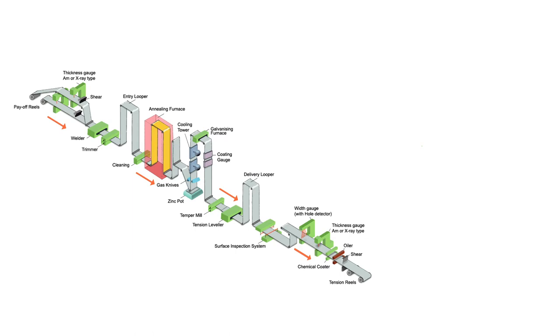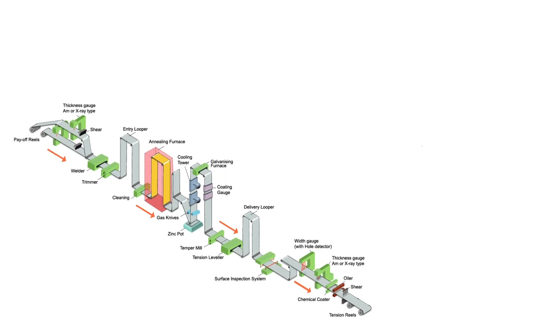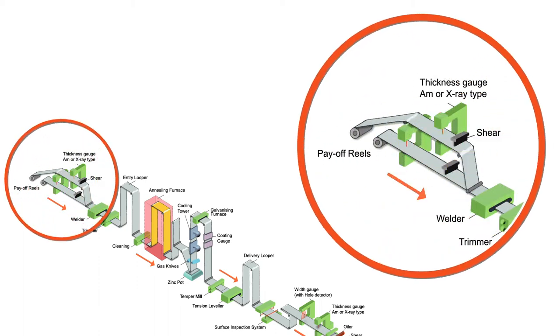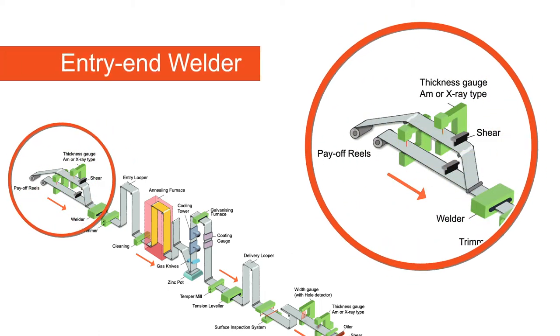Continuous hot dip coating processing lines consist of a series of steps which may include the following sequential operations. An entry end welder to join the trailing edge of one coil to the leading edge of the succeeding coil to allow the process to be continuous.